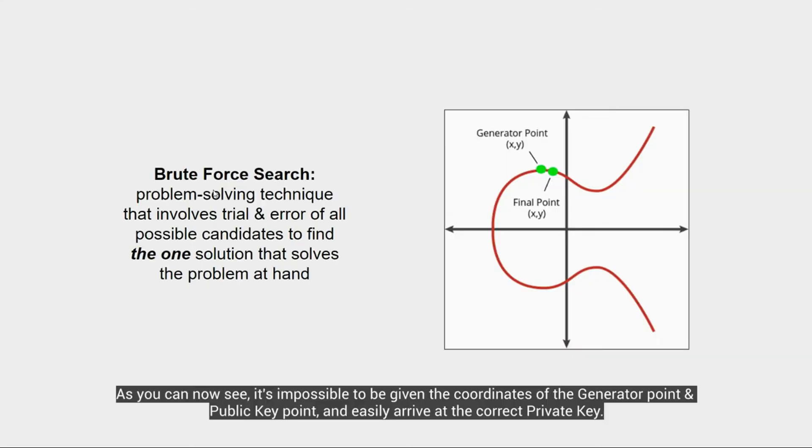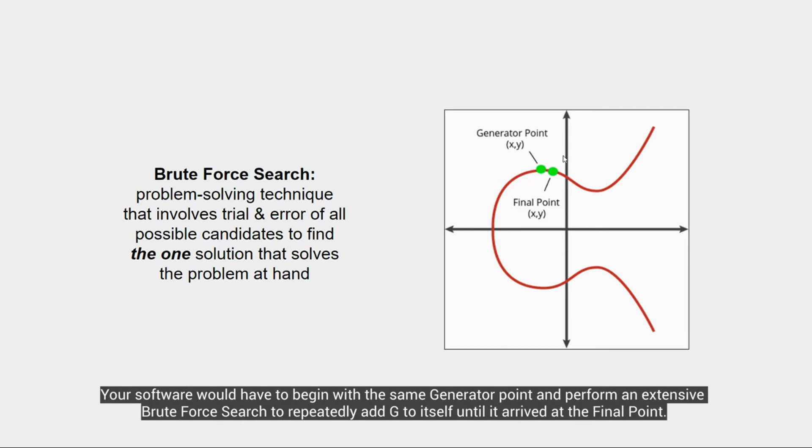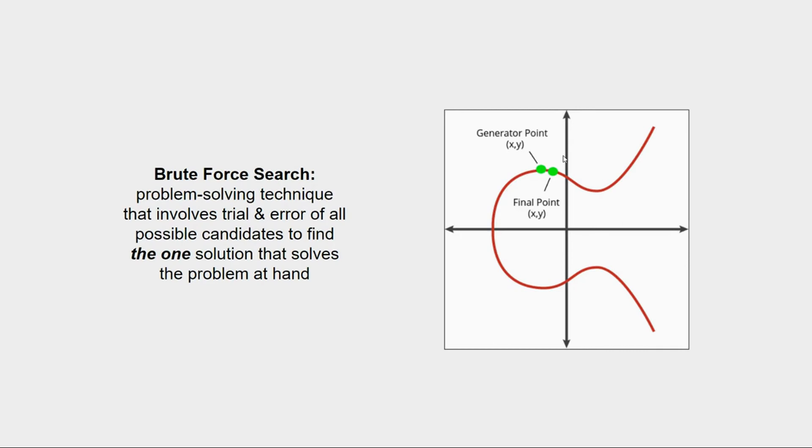So as you now see, it's impossible to be given the coordinates of both of these points and easily arrive at the answer for lowercase private key k integer. Your software would have to begin with the same g-point and perform an extensive brute force search using the same curve to repeatedly add g to itself and add g to itself and add g to itself repeatedly, repeatedly, repeatedly until it arrived at the final point. It's called brute force search.